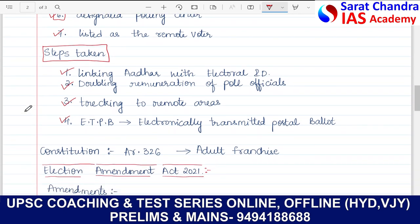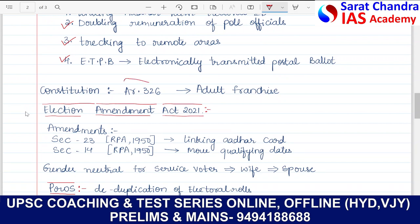Remote voting is something that still needs to be addressed. Coming to the constitutional provisions, Article 326 provides for universal adult franchise — anyone crossing 18 years of age can vote. Recently, there were amendments regarding voter ID registration. Previously there was a single qualifying date, but now there are three different dates on which you can register for voting rights. Section 23 of the RPA deals with linking of Aadhaar cards, and Section 14 of the RPA 1950 talks about moving the qualifying dates.